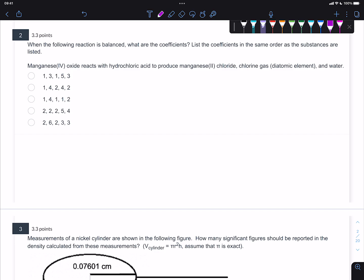Here's question two. It says, when the following reaction is balanced, what are the coefficients? List the coefficients in the same order as the substances are listed. So in these types of problems, you're going to be given a sentence of some reaction, and you have to know how to translate that chemical reaction into a balanced equation. And there's actually a bit of thinking here involved.